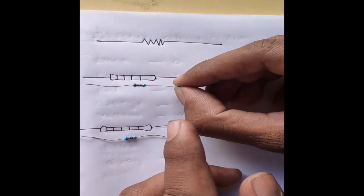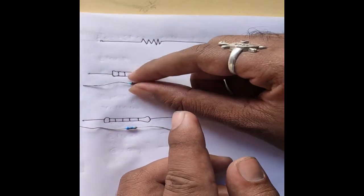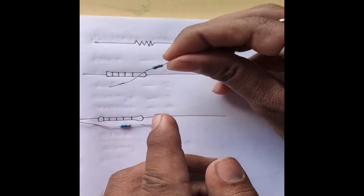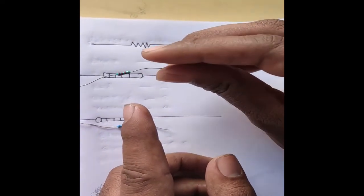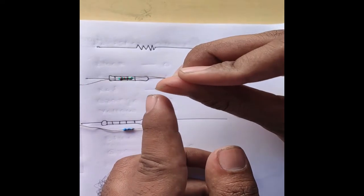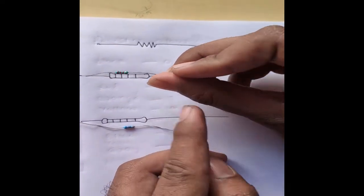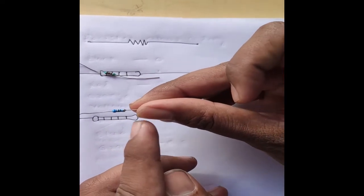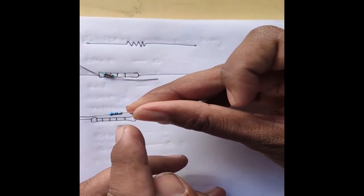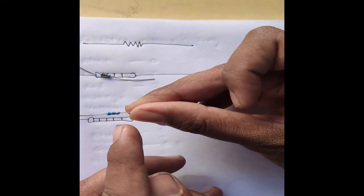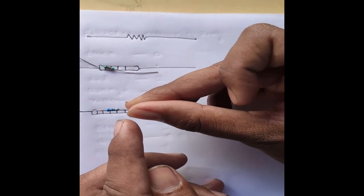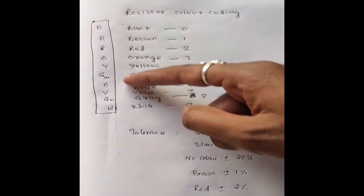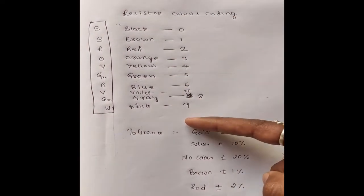This can be identified by using the base color. For a four color band resistor, the base color is green, whereas for a five color band resistor, the base color is blue. These are the colors used for coding a resistor.